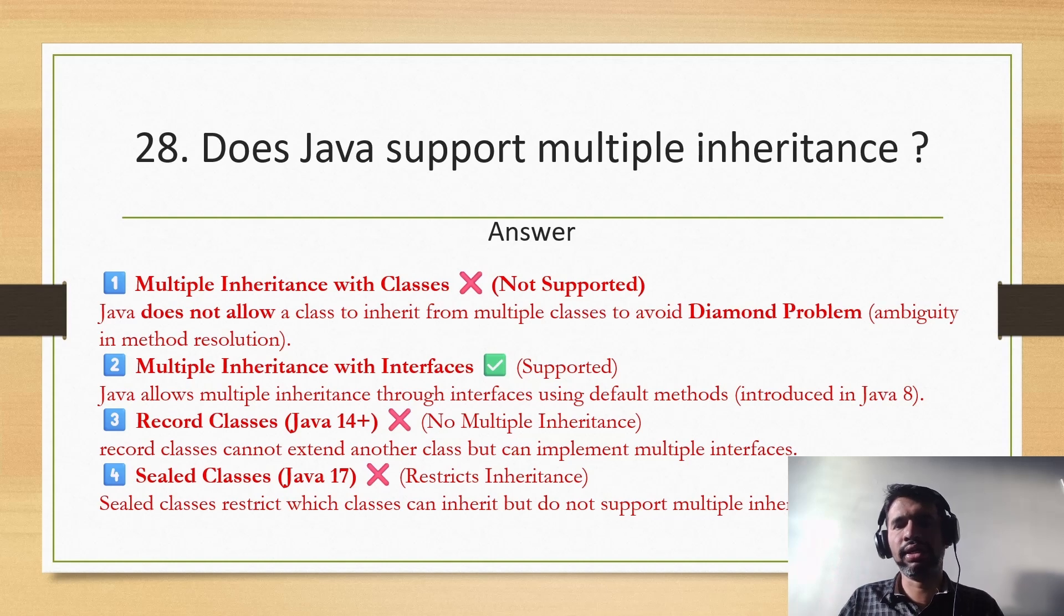But with interfaces, yes it is possible. It basically allows multiple inheritance. So in case of interfaces, a class can extend these interfaces, two interfaces it can extend. So in a way it supports multiple inheritance.